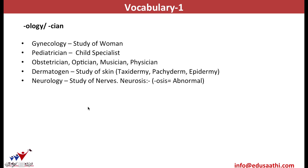Now, neurology is the study of nerves. A neurologist is a doctor who treats your brain and nervous system. The word root -osis means abnormal. Thus, neurosis means abnormal nerves. So, if somebody is suffering from neurosis, he is suffering from certain abnormality in his nervous system.